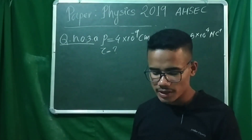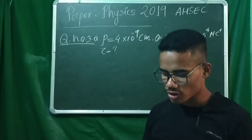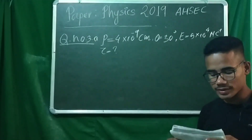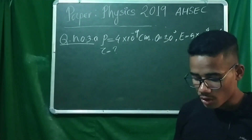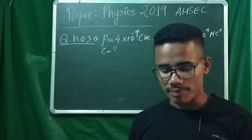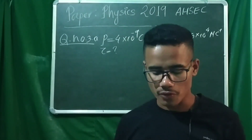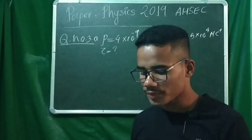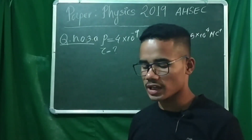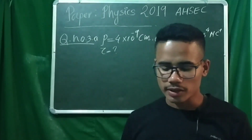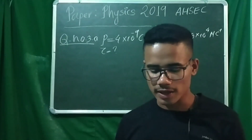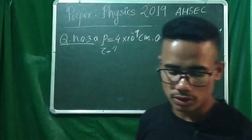Question number 3a: There is an electric dipole on the x-y plane. Its dipole moment is 4 into 10 raised to the power minus 9 C·m. On the same plane there is also a uniform electric field of magnitude 5 into 10 raised to the power 4 N/C. If the axis of the dipole makes an angle of 30 degrees with the electric field, calculate the magnitude of the torque acting on the dipole and also mention the direction of torque.